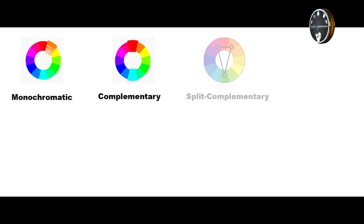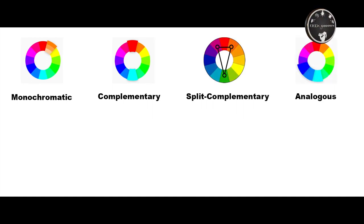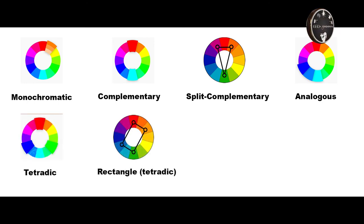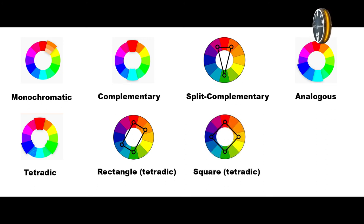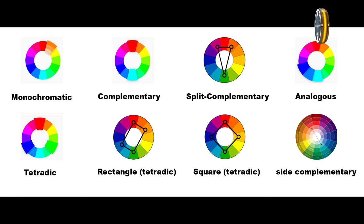So what I want to cover: Monochromatic, Complementary, Split Complementary — which is an analog type — Triadic, Rectangle Triadic, Square Triadic, and Side Complementary. These are the different types of color styles we can create.